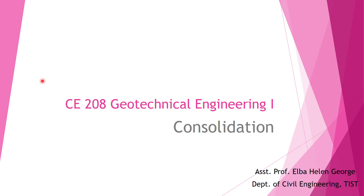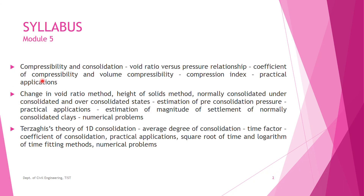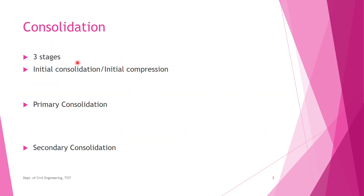We will start off with Module 5, discussing consolidation. Consolidation is the reduction in volume and it occurs in three stages: the first stage is initial consolidation or initial compression, the second stage is primary consolidation, and the third stage is secondary consolidation.